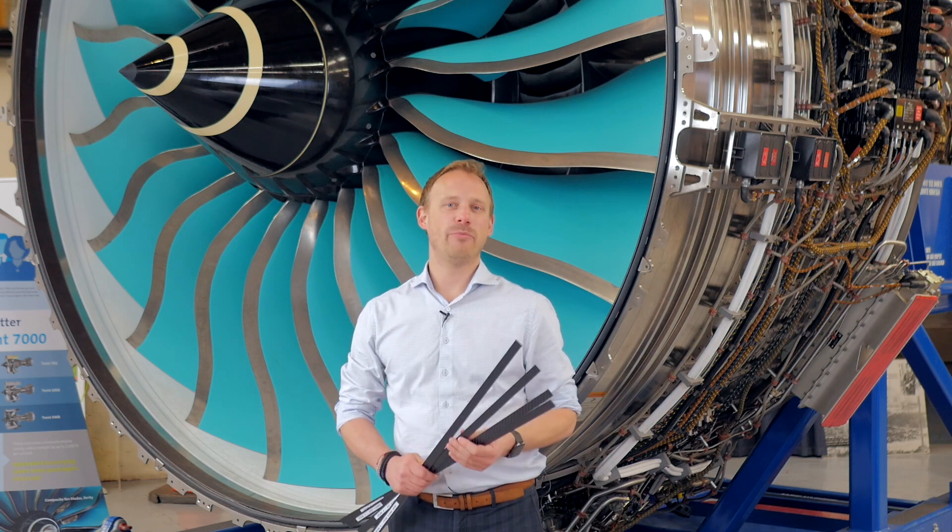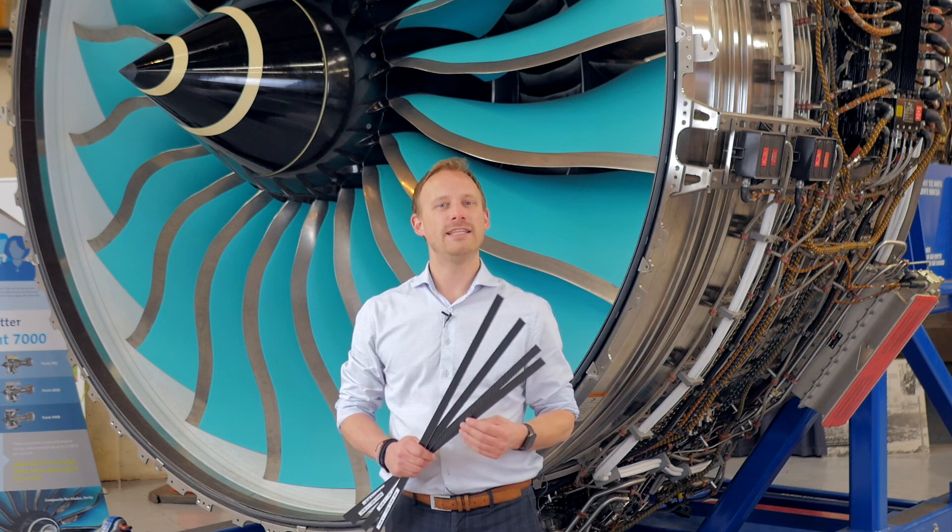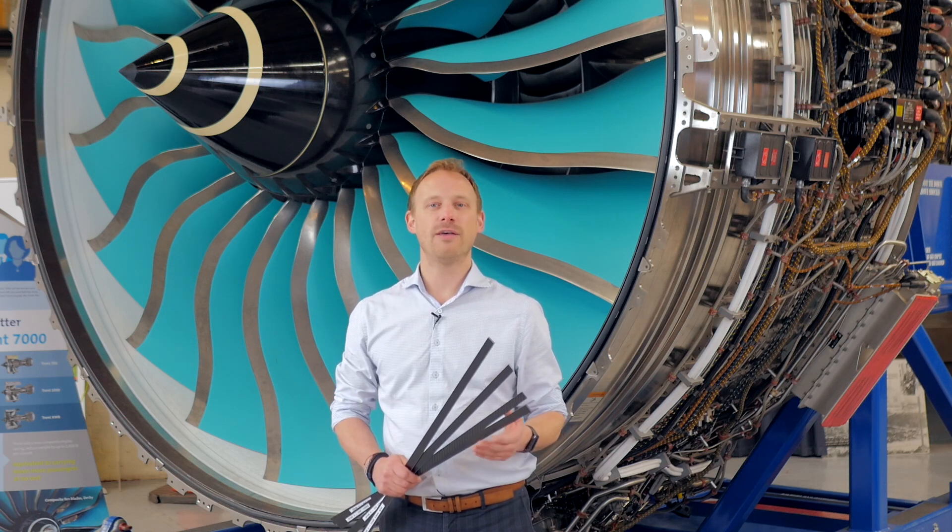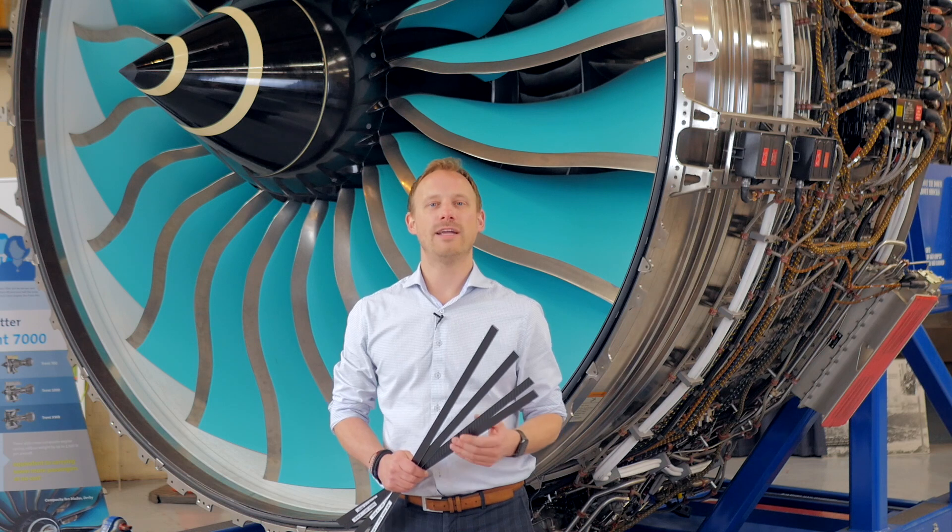Fan blades, as seen behind me, are a great study example looking at the evolution and interplay of materials and geometry. They need the correct balance of stiffness to move compressed air through the bypass ducts and the core engine with sufficient high strain rate flexibility to withstand impacts as seen in bird strikes.